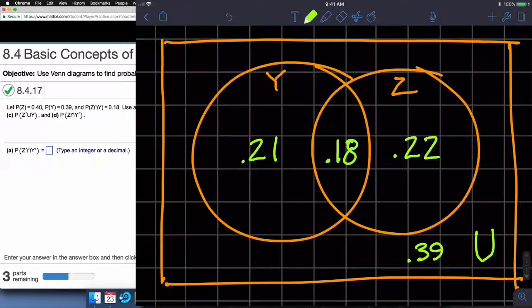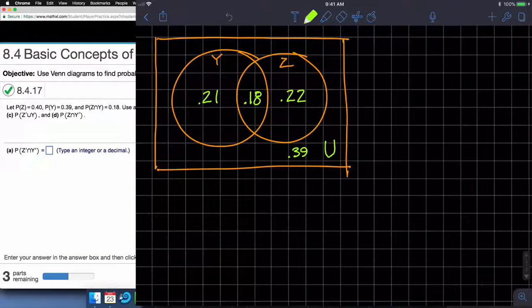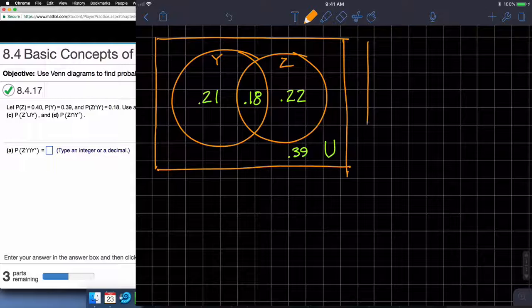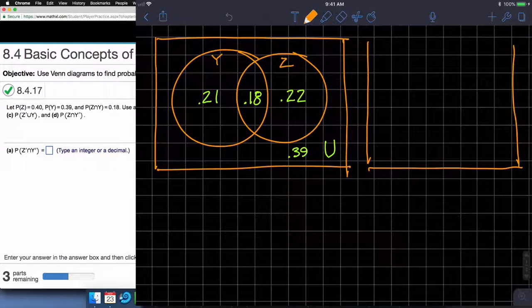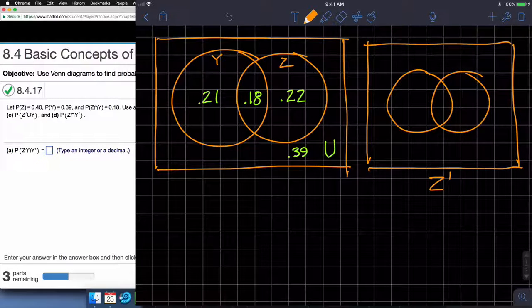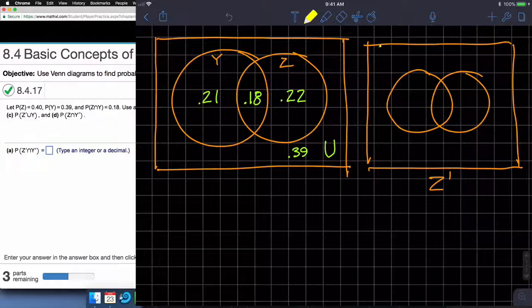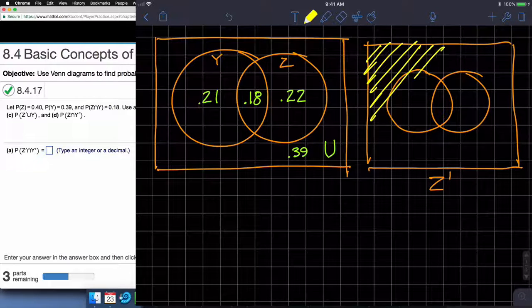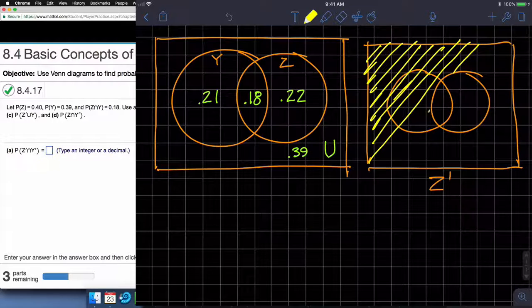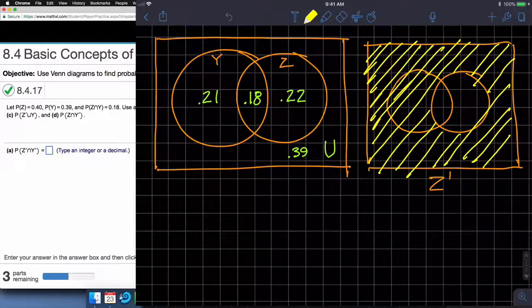So 39% probability for the universe, 22 for only Z, 21% for only Y, and 18% for both Y and Z. So let's shrink this down and start working on these other things. So let's look at the Venn diagram to my left, but let's adapt it to be Z complement. So Z complement is everything not in Z, so I'm shading everything not in Z.